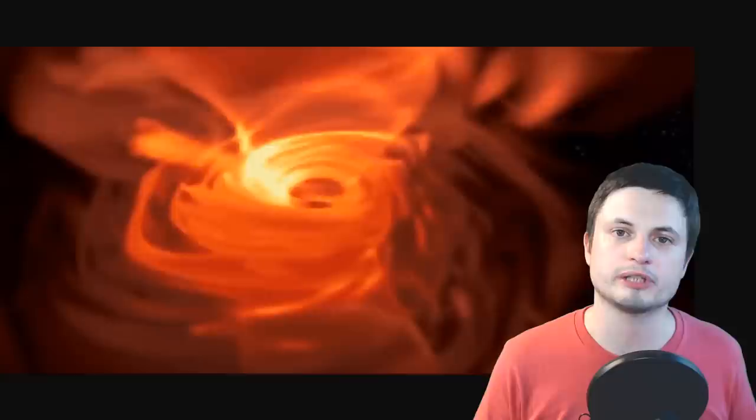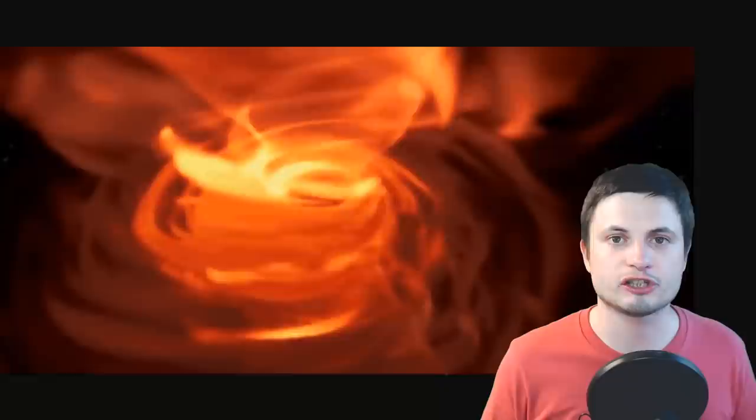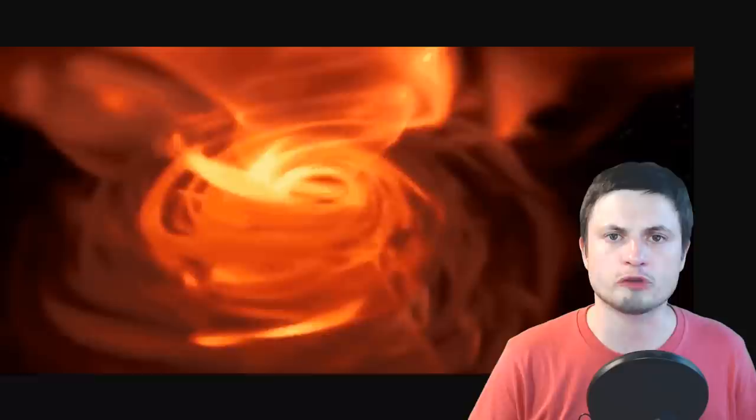But surprisingly this particular study was able to discover something that other studies were not really clear on. What it discovered was a very interesting hydrogen cloud sort of creating an accretion disk around the black hole at a distance of roughly 600 astronomical units in total, which is roughly around 600 times the distance of Earth from the sun.